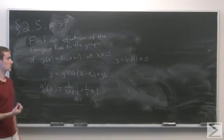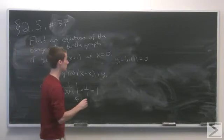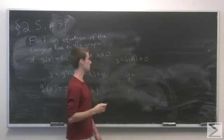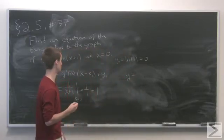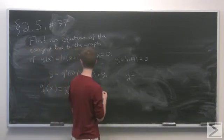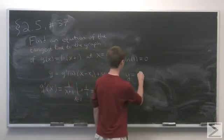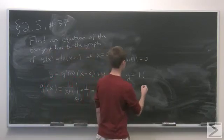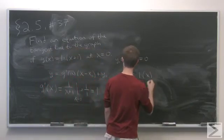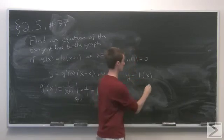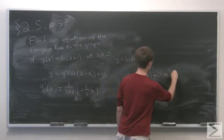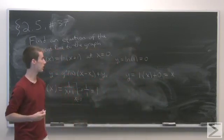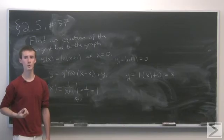The equation for the line tangent to the graph of g of x at the origin is y equals g prime of 0, which is 1, times x minus x0, which is x minus 0, plus y0, which is 0. So the tangent line is simply y equals x.